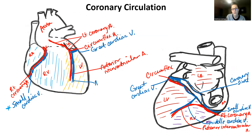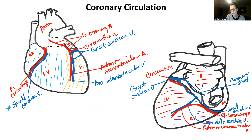Down at the bottom it is called the anterior interventricular vein if you're really curious, but that upper part is the great cardiac vein. All these veins drain into the coronary sinus, and then the coronary sinus drains into the right atrium just above the inferior vena cava.